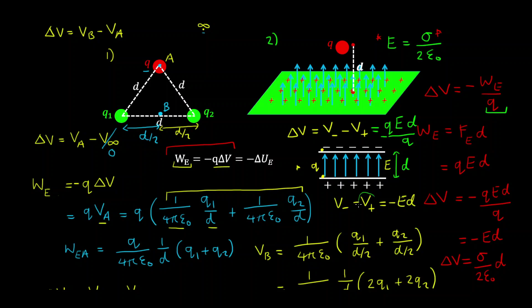This tells us that the electric potential at the positive plate is greater than at the negative plate. The test charge moves from a point of higher potential to a point of lower potential, where it will have higher kinetic energy. We can confirm that V-plus is greater than V-minus because we obtained a negative result on the right-hand side.